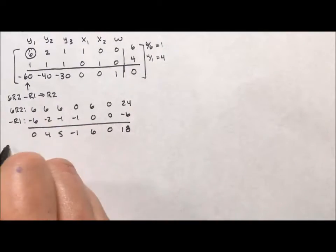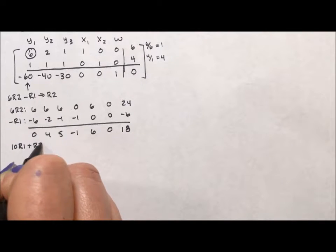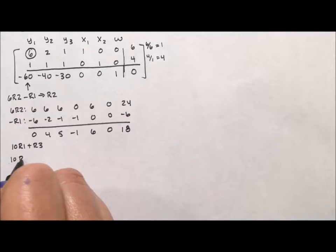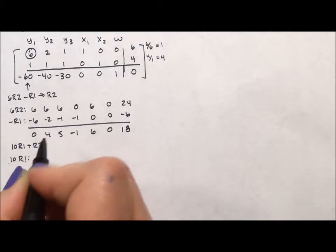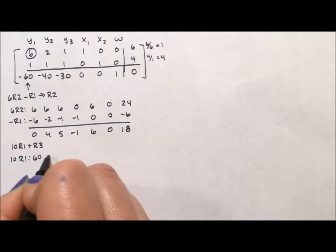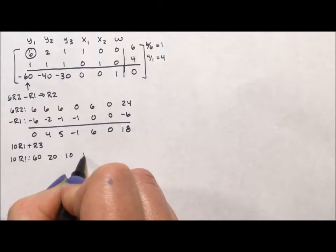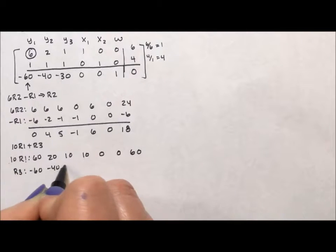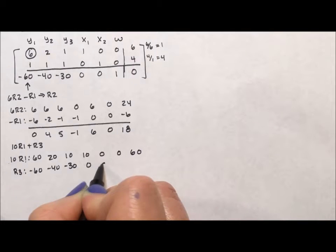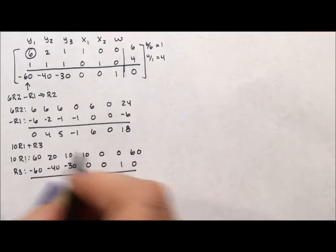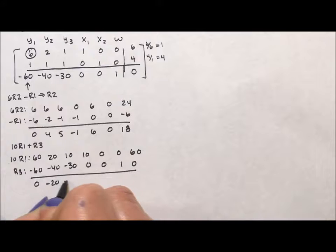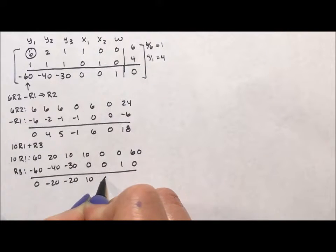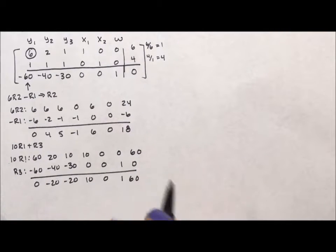Okay, then to get rid of the 60, I'm going to do 10 times row 1 plus row 3, 10 times row 1 is going to be 60, 20, 10, 10, 0, 0, 60. And row 3 is going to remain negative 60, negative 40, negative 30, 0, 0, 1, 0. And when I add down, I'm going to get 0, negative 20, negative 20, 10, 0, 1, 60.